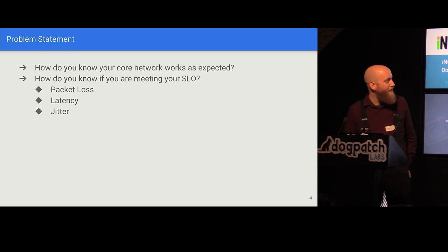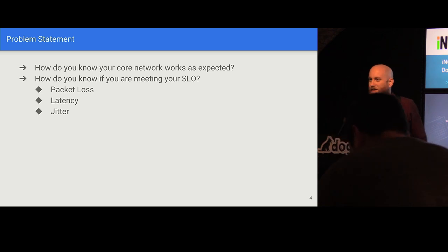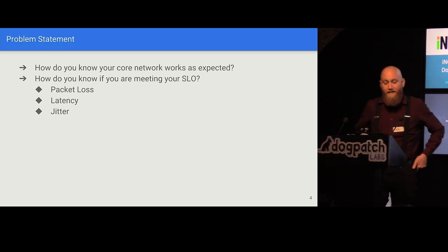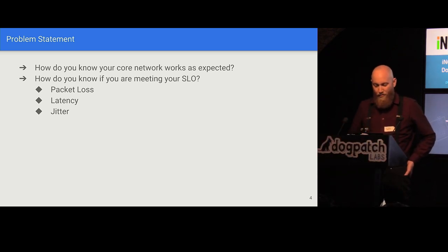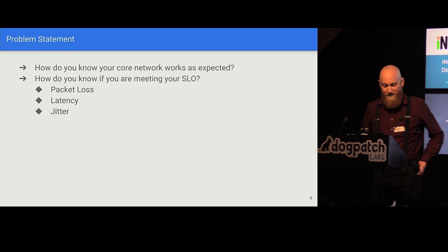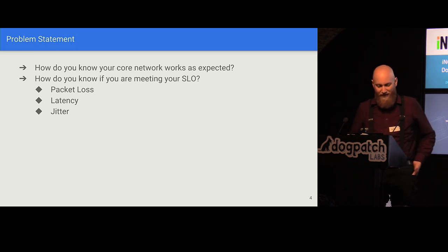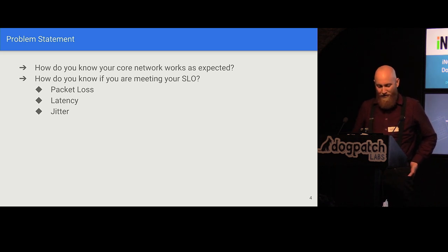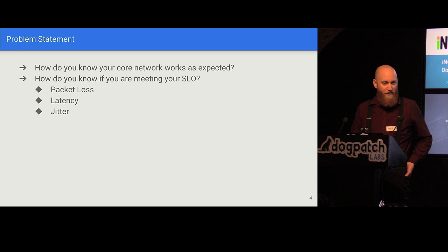The problem I was working on: you run a network, and how do you actually know that your core network is running and working as expected? You define some SLOs, some service level objectives, and parameters you want to meet — not exceeding a certain amount of packet loss, not exceeding latency, not having too much jitter on certain links. But how do you actually know if you are meeting your targets?